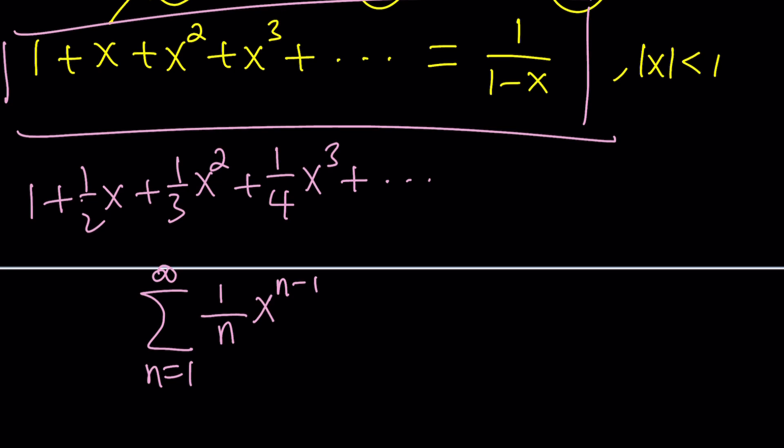If we had n times x^(n-1), we would know what to do, because if you differentiated x^n, this is what you'd get. Instead of n, we have 1/n. That tells you something - you need to go the opposite direction, which is integration. So we need to integrate.